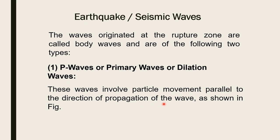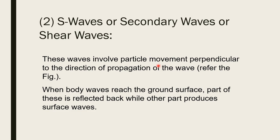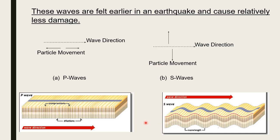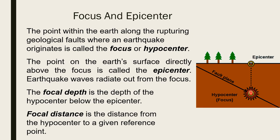S waves, or secondary waves or shear waves, involve particle movement perpendicular to the direction of propagation. When the S waves move, the motion of the particle is vertical. When body waves reach the ground surface, part of the waves are reflected back while the other part produces surface waves.